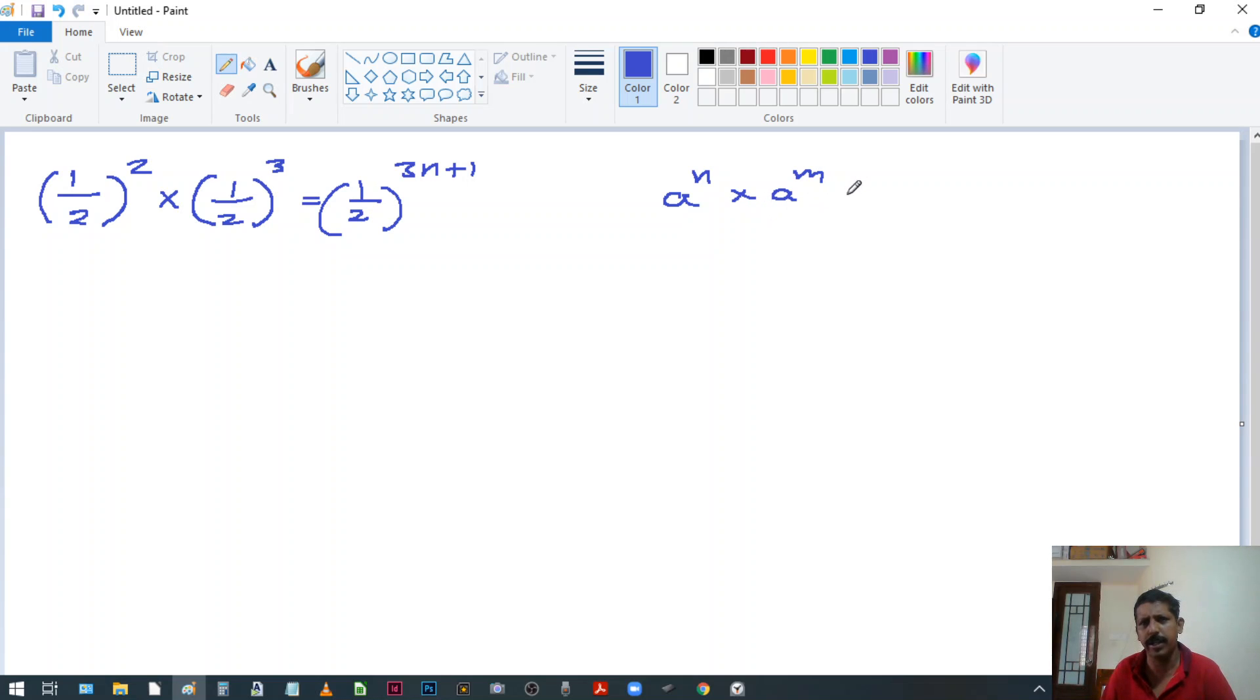So in this situation, when the bases are same, you just write like this: a raised to, then you can add up the powers. So that's the rule.